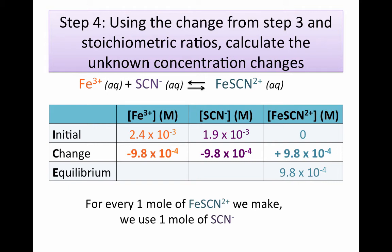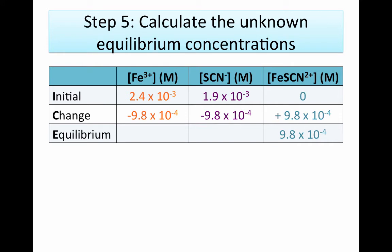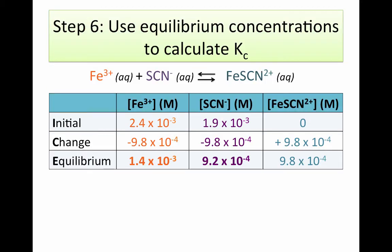Now we've filled in the change row. Step five is to calculate the unknown equilibrium concentrations using our initial concentrations and our change in concentration. We started with 2.4 × 10⁻³ molar iron 3+ and decreased that concentration by 9.8 × 10⁻⁴ molar, so we just subtract. Likewise, we started with 1.9 × 10⁻³ molar of thiocyanate and decreased it by 9.8 × 10⁻⁴ molar. Now that we have all of our equilibrium concentrations, we can use them to calculate our equilibrium constant.